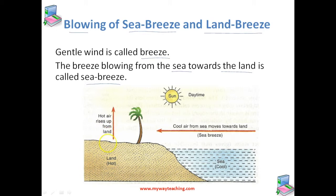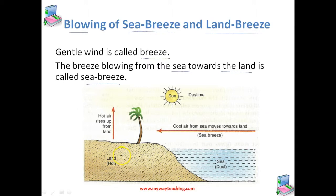Since this hot air rises upwards, this cool air from the sea moves towards the land and it forms convection currents. The breeze blowing from sea towards the land we call it as sea breeze. The cool sea breeze blows only during the daytime when the land is hotter than the sea.